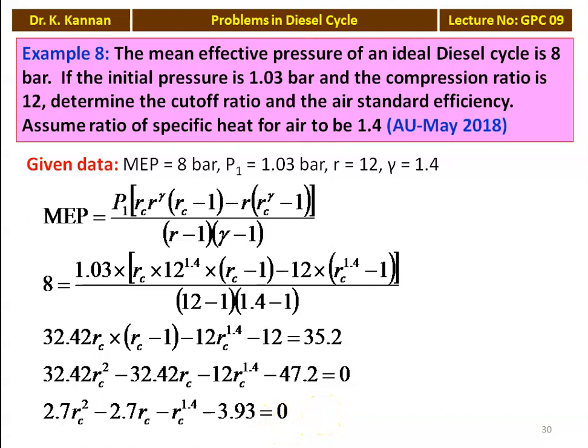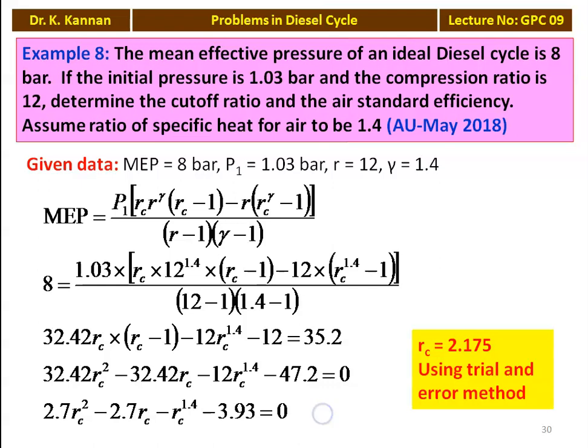There is no analytical solution, so we solve the equation by trial and error. We assume a value for Rc in the range above 2 and below 3, substitute it, and verify whether the equation equals zero. We start with Rc equals 2, then try 2.1, 2.5, 2.75, incrementally adjusting until the equation is satisfied. Using this trial and error method, Rc equals 2.175.